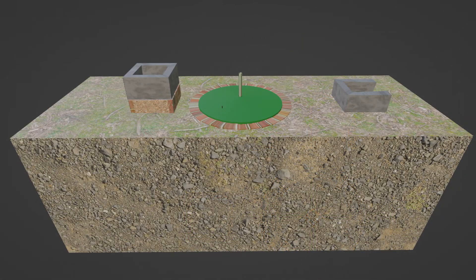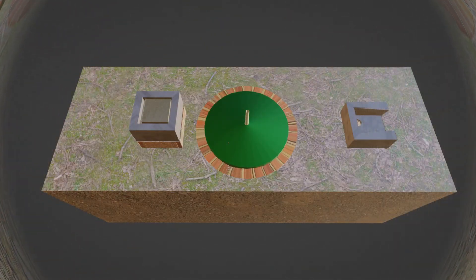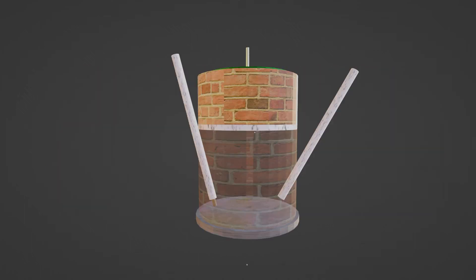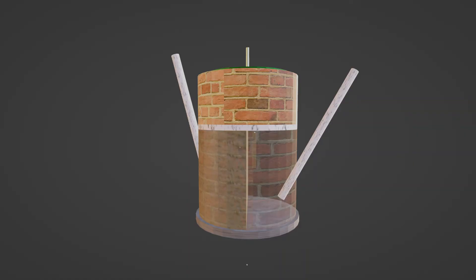We are now ready to see the working of the floating drum biogas plant in action. A large amount of slurry is needed to start a biogas plant — for example, a 6 cubic meter plant with 40 days retention time needs around 12,000 liters of slurry. Slurry is put into the inlet tank and moves to the digester through the inlet pipe. It first fills the inlet side of the partition wall, moves up and over the partition wall, then fills the other part of the digester. In the absence of oxygen, anaerobic digestion starts, and after stabilization, biogas is produced, which lifts the gas holder up.